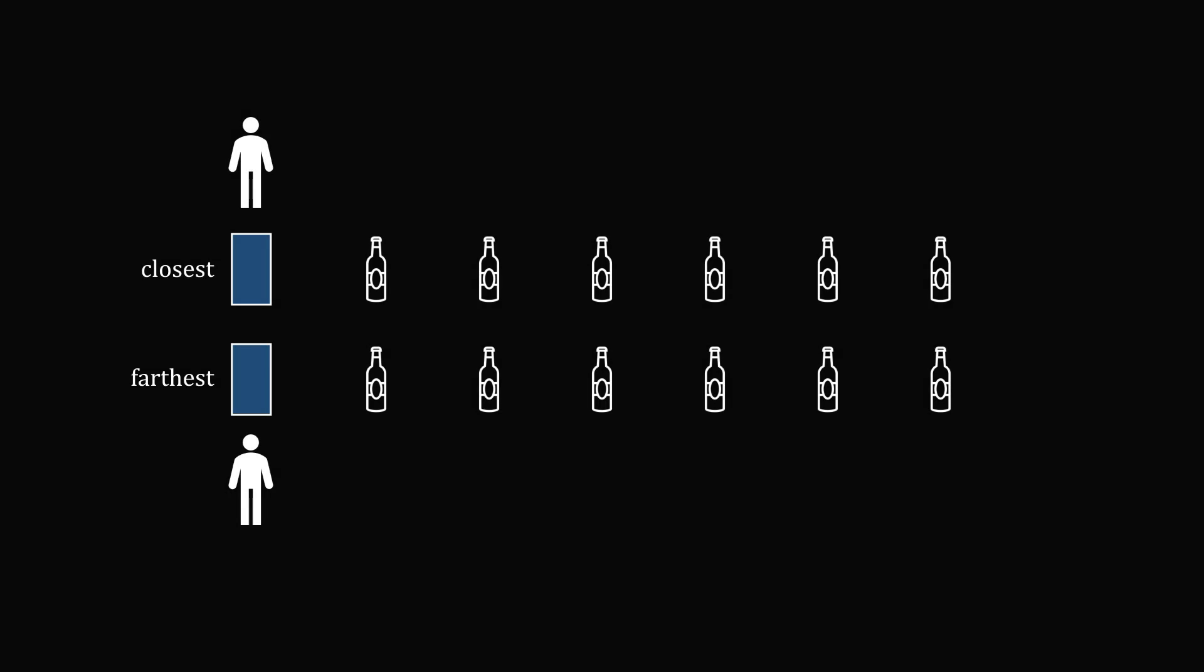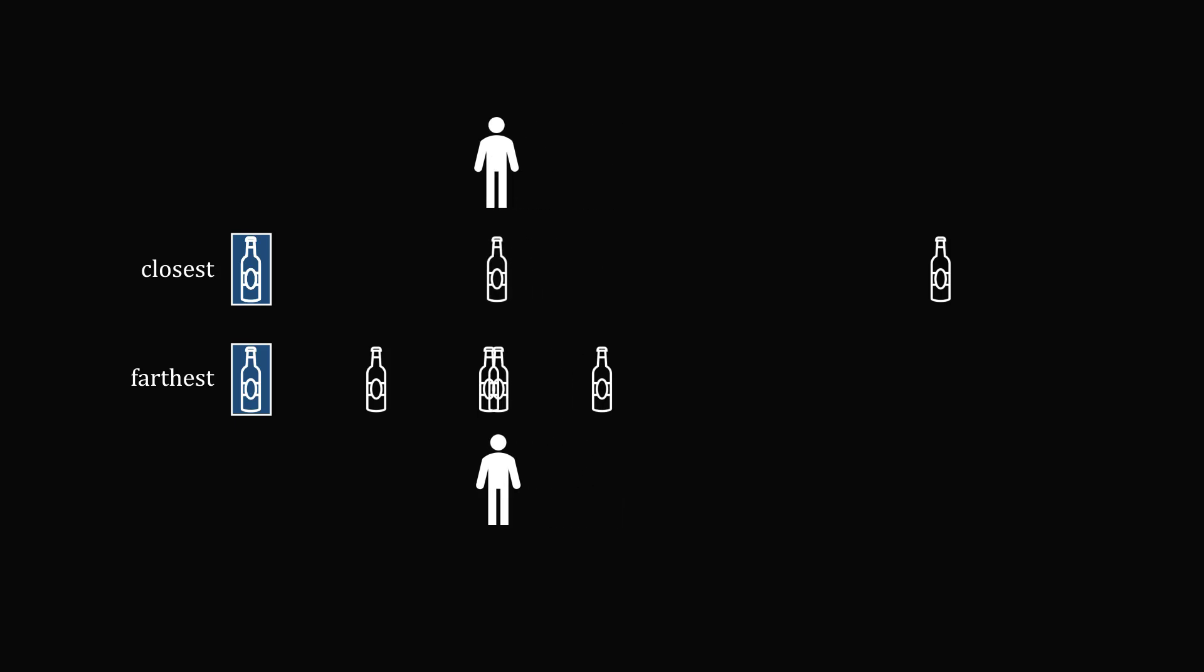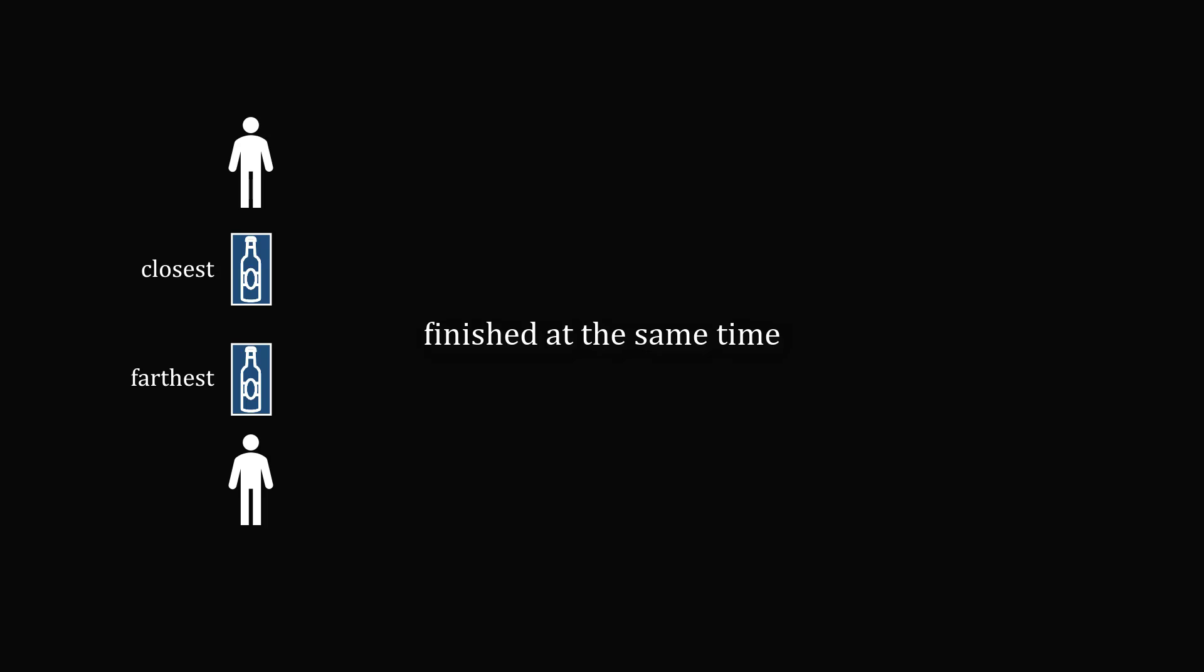So let's do an analysis where two contestants are collecting six bottles. Imagine that one contestant is always collecting the closest bottle, and the other contestant is collecting the farthest. If they work at the same rate, I will illustrate that the two contestants will finish at exactly the same time. So we can see that the choice of strategy actually doesn't matter.